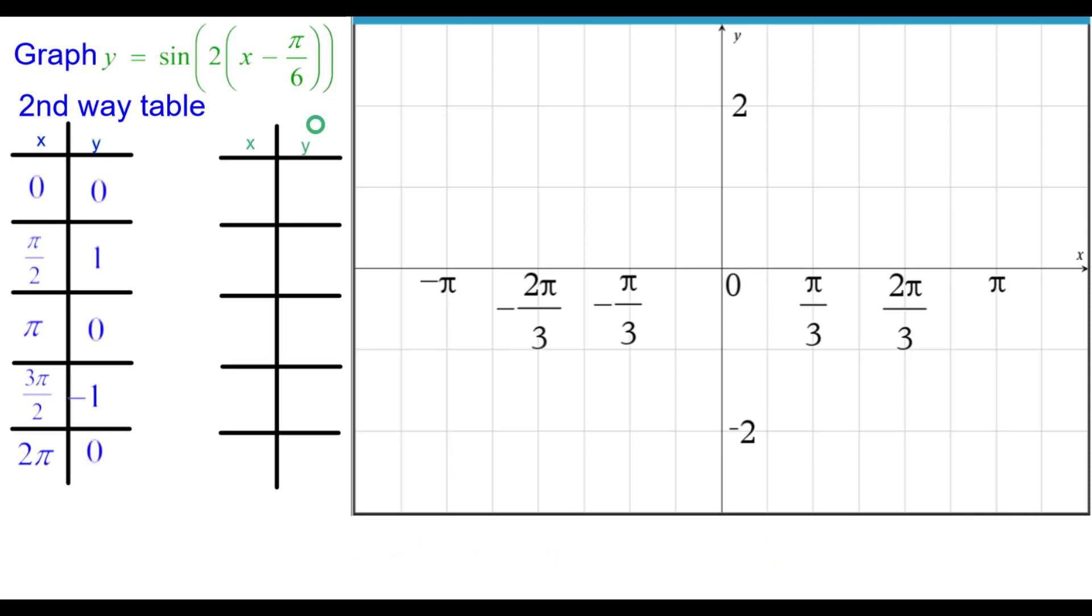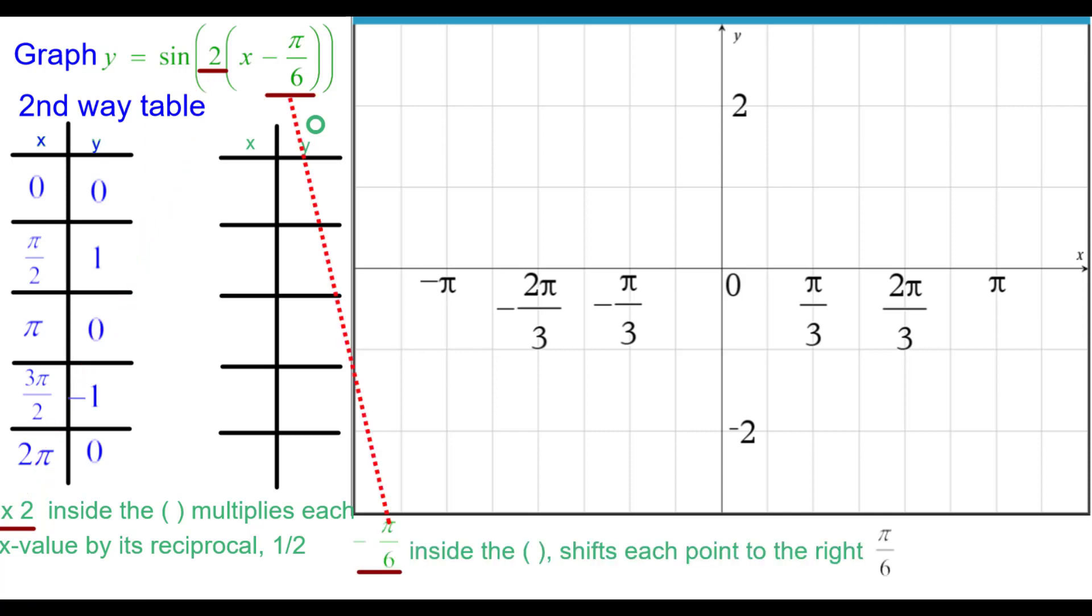We need to create a second table. And we know that we have to, this times 2 is inside the parenthesis. And that multiplies each x value by its reciprocal, 1 half. The minus pi over 6 inside the parenthesis shifts each point to the right, pi over 6. Which means we have to add pi over 6 to each x value to get it to the right.